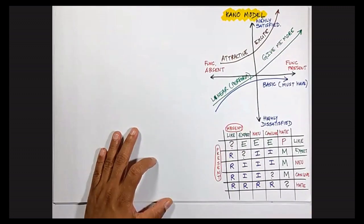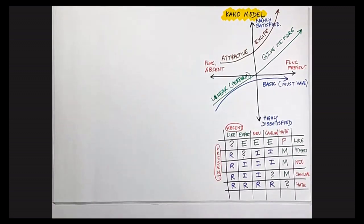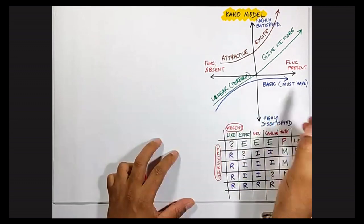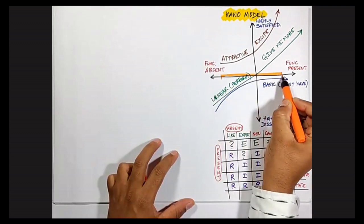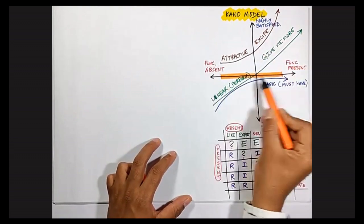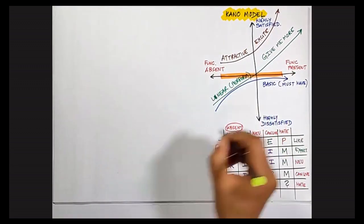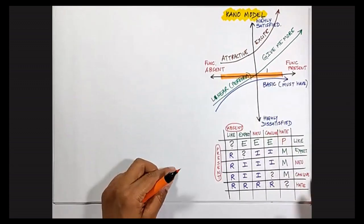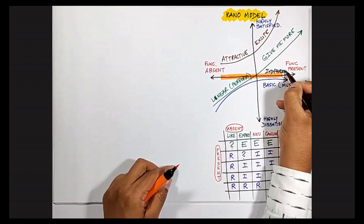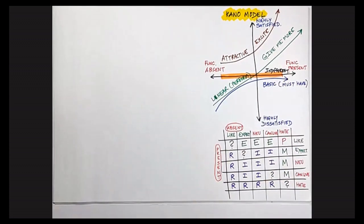Apart from this, there is one axis which is neutral — meaning whether the functionality is present or absent, the customers don't care about it. The emotion level stays neutral either way, whether highly dissatisfied or highly satisfied. This falls under the indifferent category — customers make no difference at all and simply don't care.